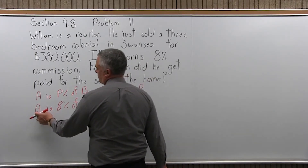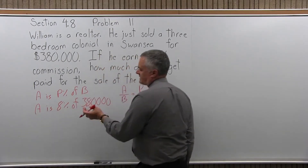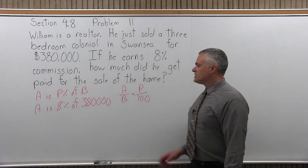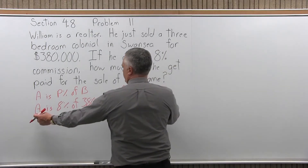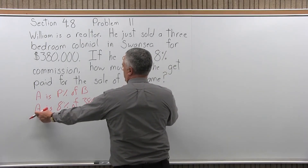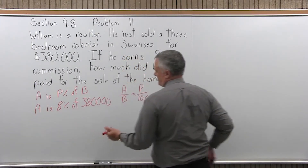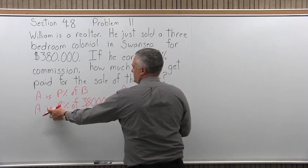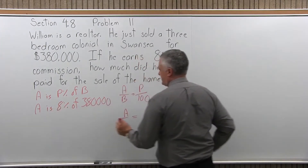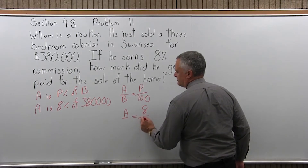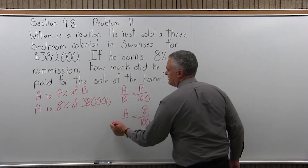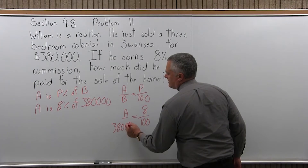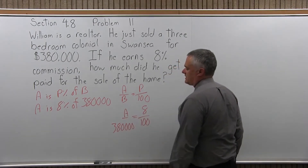is 8% of $380,000. That's the commission I'm looking for — it's 8% of the sale of the house, $380,000. So to put it in the format for my formula, A is the unknown so it can just stay as A. The 'is' becomes an equal sign, 8% is 8 over 100, and B is $380,000.